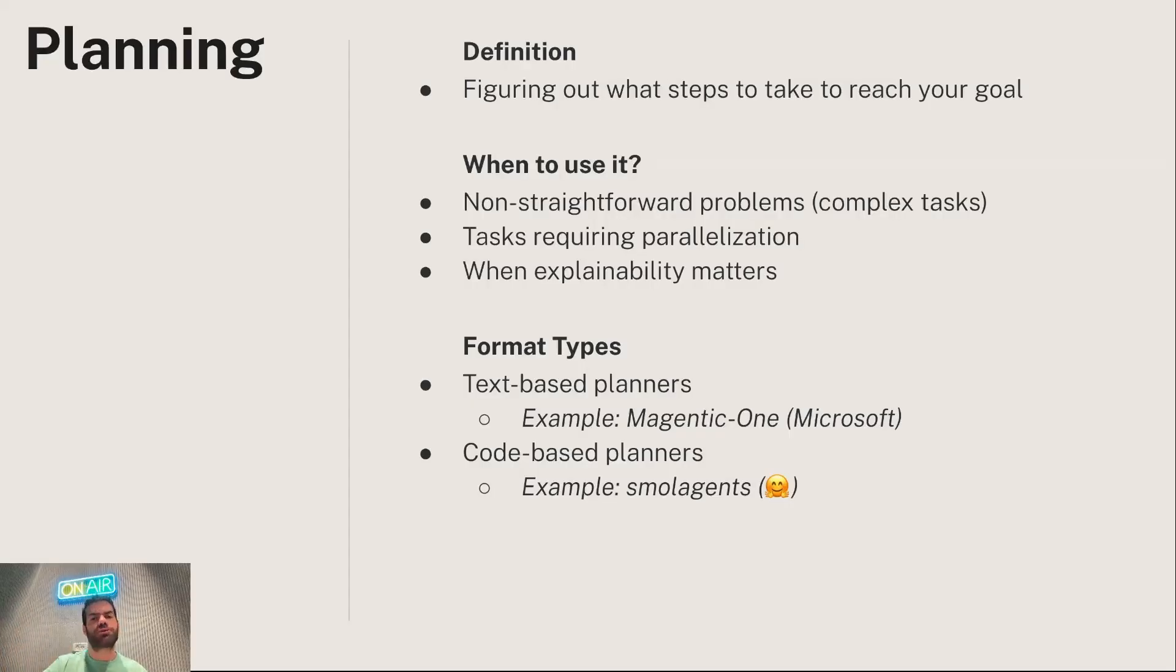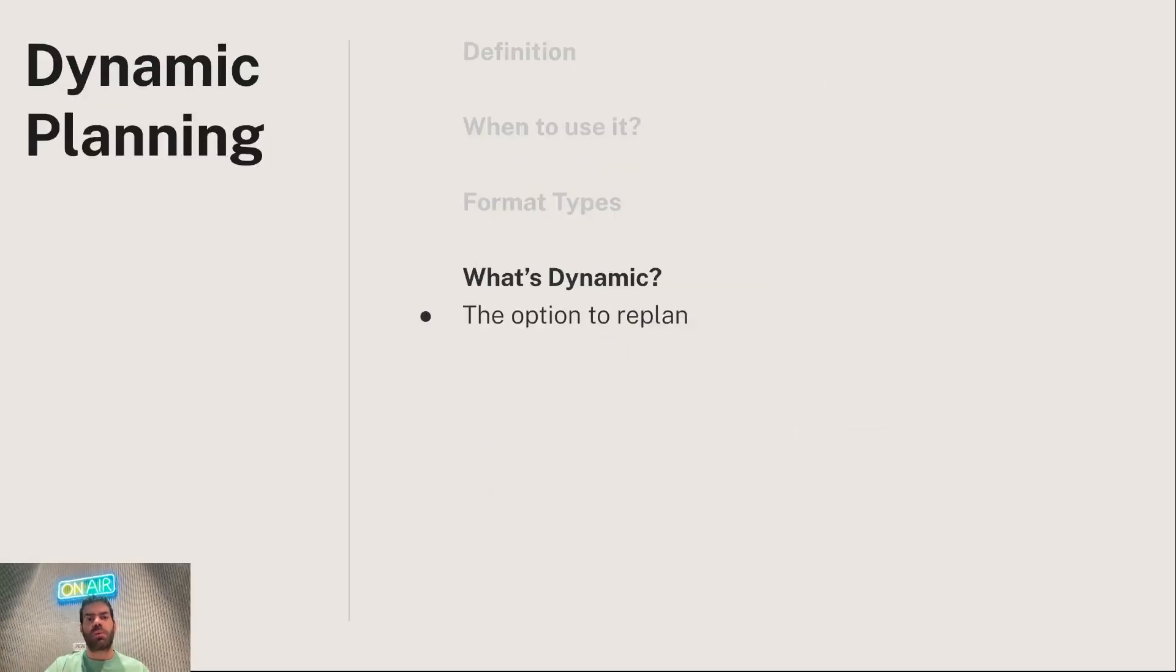You can talk about forms-based planners, such as text-based as Magentic 1 by Microsoft, or code-based planners by small agents from Hugging Face. What do you mean when I say dynamic planning? It's that there is an option to do replan. Essentially, it's not just have one plan and go all the way in this plan. In the middle, you can ask yourself, is this plan good, or should I do replanning and go somewhere else?